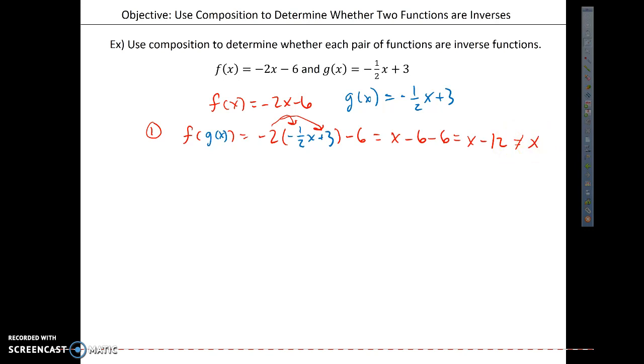And that's good that we encountered this on our first step. If we encountered it on our second step, again, we would reach our conclusion that these are not inverses. But on our first step, we saved some work. So, we can say, therefore, f of g of x is not equal to x. And what that means, therefore, f of x and g of x are not inverse functions.